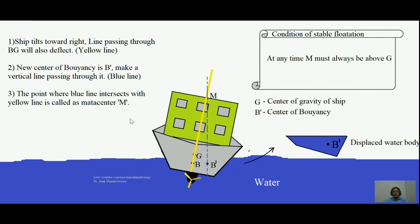Now imagine that the ship is given a force so that it tilts toward the right-hand side. In this case, the water body the ship displaces will change shape. The displaced water body's shape will change, and the center of gravity of this displaced water body shifts toward the right because more water is there on the right. So center of buoyancy will also shift. The new center of buoyancy is B dash.